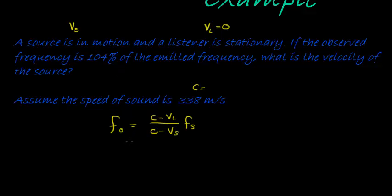But we don't have any frequencies. They're not mentioned yet. All they tell us is that the frequency that is observed is equal to 104%. In other words, 104 over 100. Or just 1.04. I'm going to write it like that. 1.04 of the emitted frequency.